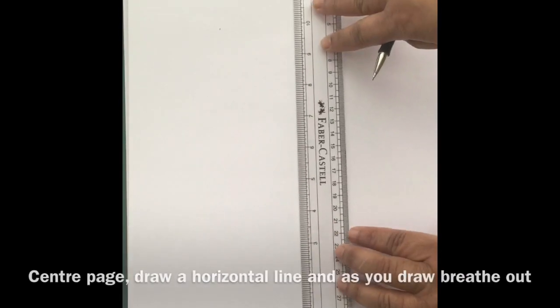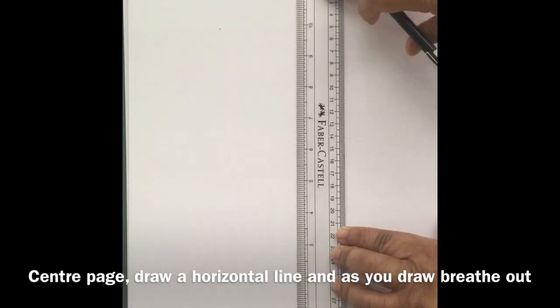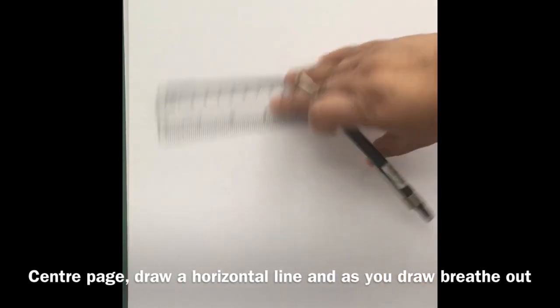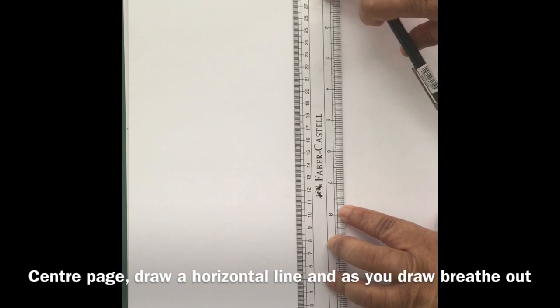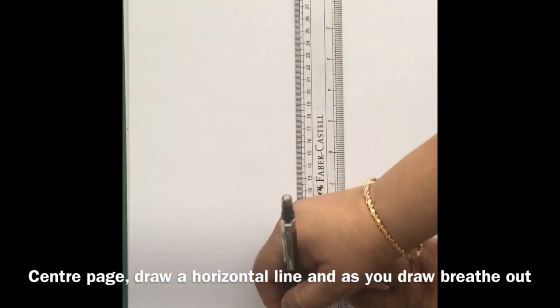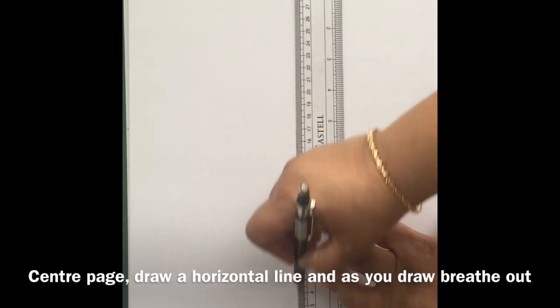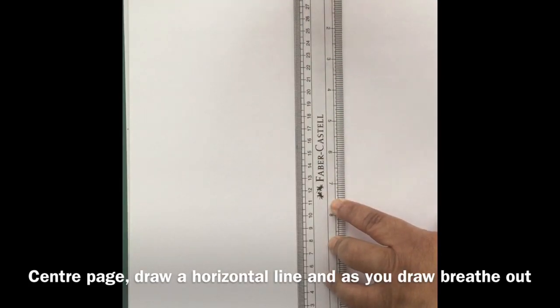We place the ruler in the middle of the page, and today we're going to use centimeters and draw the horizontal line or the horizon. As we draw, we breathe out.